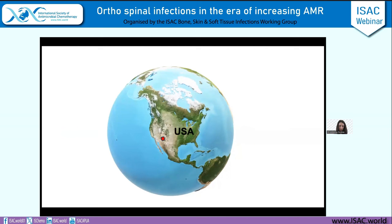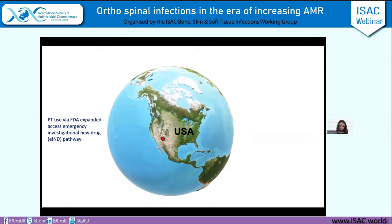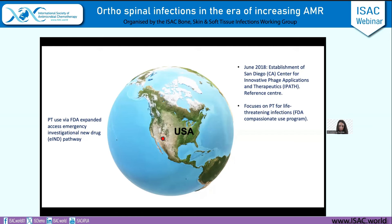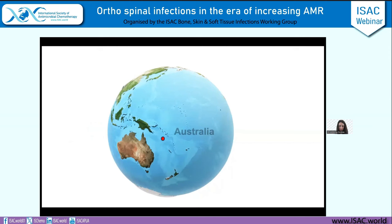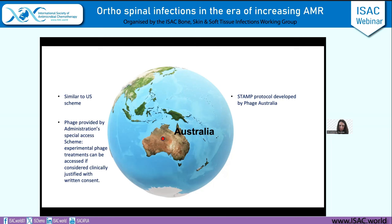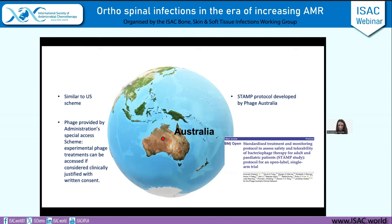In the US, the FDA has an expanded access emergency program allowing access to phages as investigational new drugs. In 2018, a phage centre was established in San Diego, leading compassionate use requests and pushing forward clinical trials. In Australia, similarly, there is an expanded special access scheme for experimental phage treatments, and a STAMP protocol published by Phage Australia sets out how to assess safety and tolerability for all patients receiving bacteriophage therapy in compassionate use programs, gathering more data in this area.